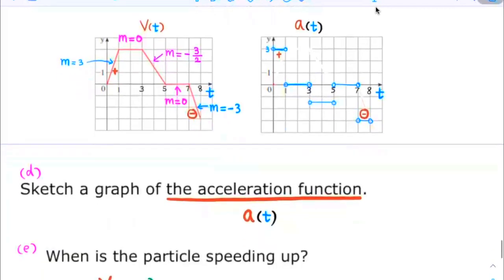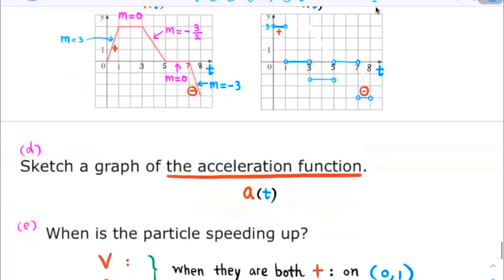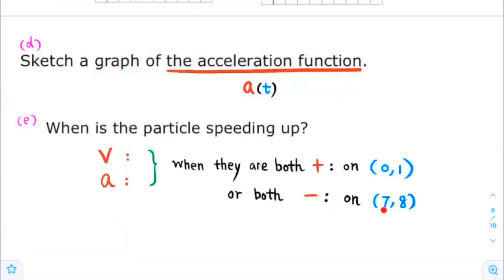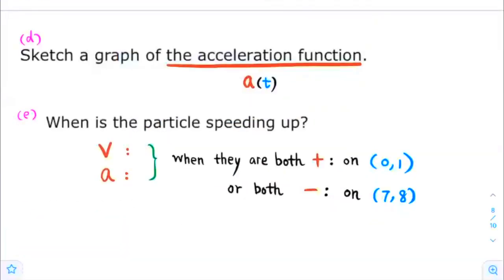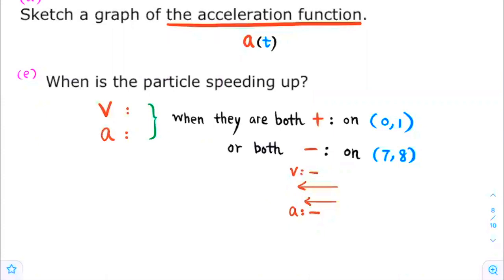On the time interval from 7 to 8, velocity is negative, meaning the particle is moving in the negative direction. Acceleration is also pointing in the same negative direction, so it is pushing the particle in the same direction and speeding it up. Therefore, the particle is speeding up on the intervals from 0 to 1 and from 7 to 8.